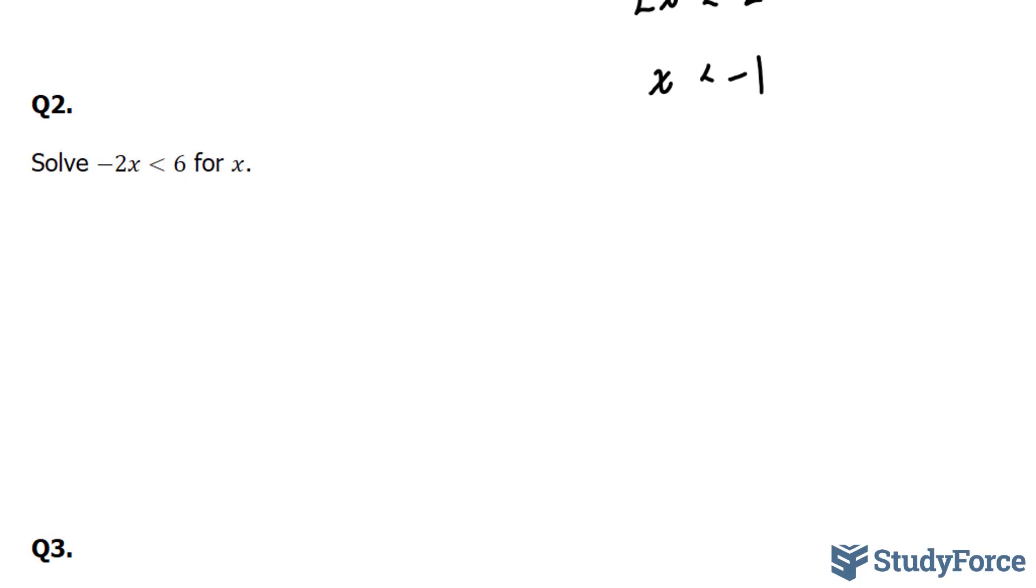Here, they're asking us to solve negative 2x is less than 6 for x. Like we did above, we're going to treat this like an equal sign. Negative 2x is less than 6. Now, we're going to divide by a negative number, negative 2.